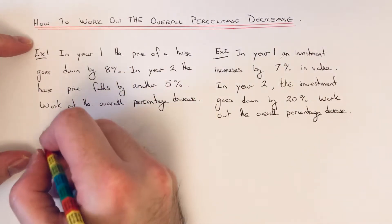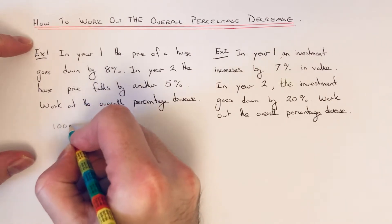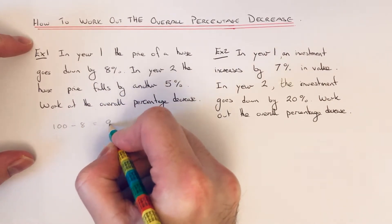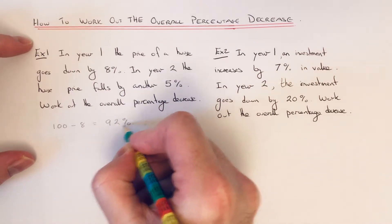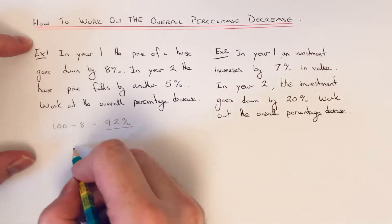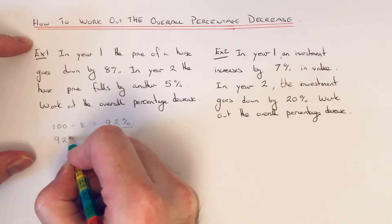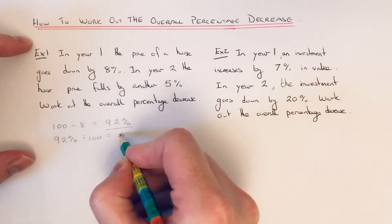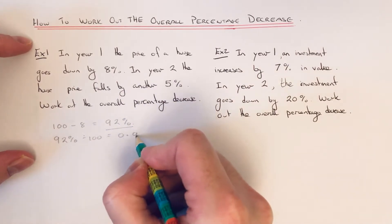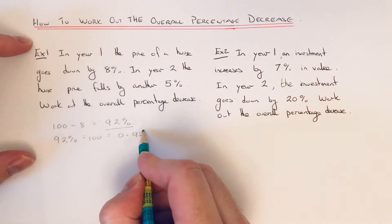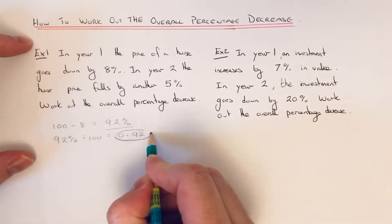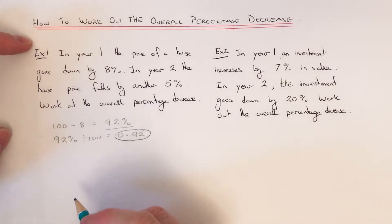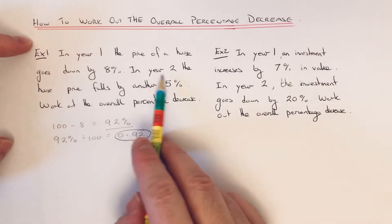Let's find the decimal multiplier for year one. It goes down by eight percent, so we take eight off a hundred percent, which gives us 92 percent. We now convert that into a decimal by dividing by a hundred, which gives us 0.92. That is our decimal multiplier for year one.